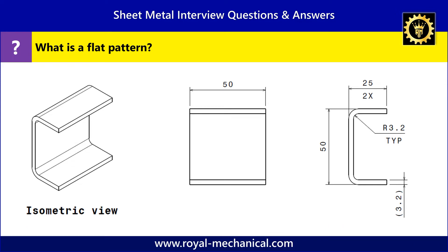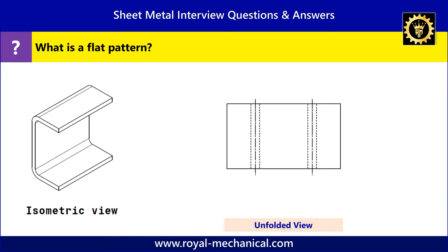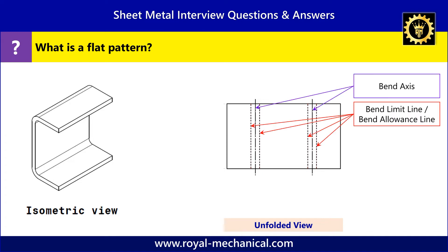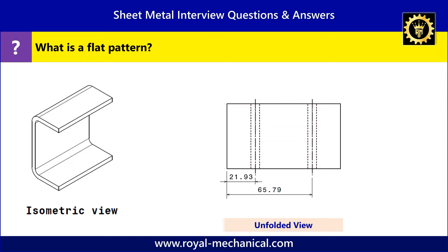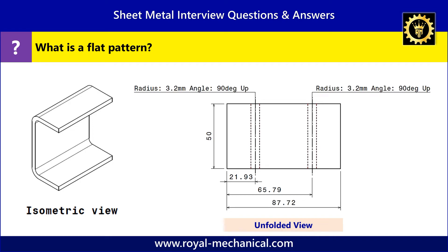Let's take an example of a C-shaped sheet metal component. The unfolded view has unbent both the bends. It also has the bend axis and bend limit lines. We need to add all the dimensions essential for manufacturing the sheet metal component, like the dimensions to the bend axis, overall dimensions, and the bend notes.